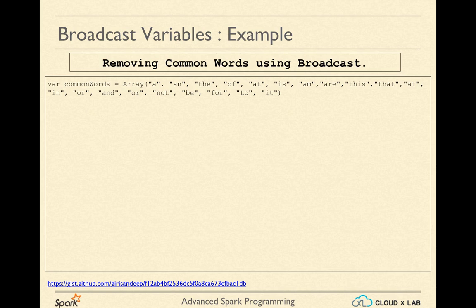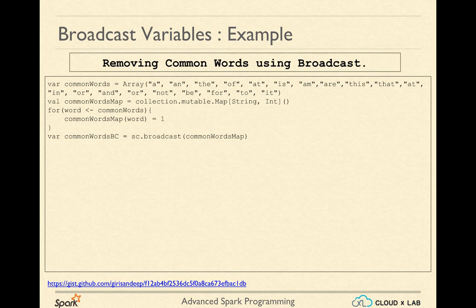Say we have an array of strings which might be loaded from a file on a driver. Here it is defined inside the code. This array of strings contains the common words. Let's convert this array into a map. Looking up for a word in a map becomes really fast as compared to an array. Then we create a broadcast variable using sc.broadcast method on SparkContext, passing our map as the argument.